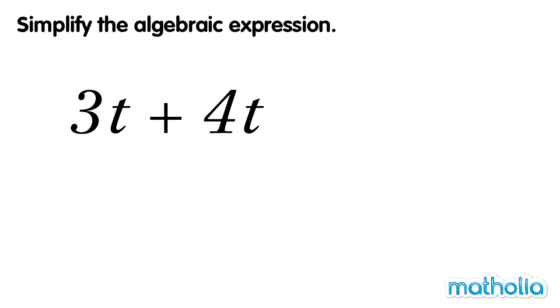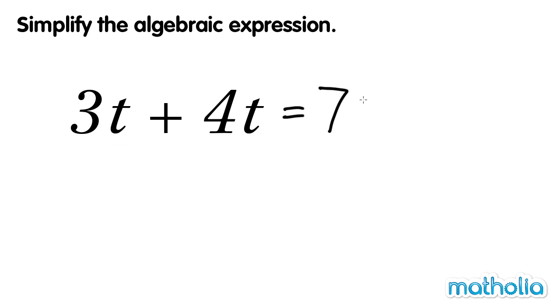Let's simplify 3t plus 4t. 3 plus 4 equals 7. So, 3t plus 4t equals 7t.